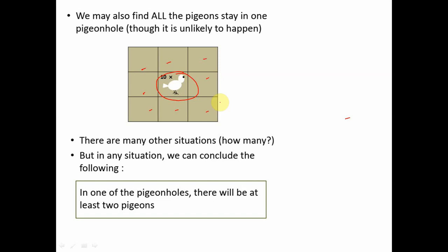There are other situations — we can fit 5 pigeons here and 5 here, or 6 here, 2 here, 1 here, 1 here, and the remaining empty, and so on. There can be any number of possibilities, but in any situation one thing is clear: there will be at least one pigeon hole that is going to have a minimum of 2 pigeons.